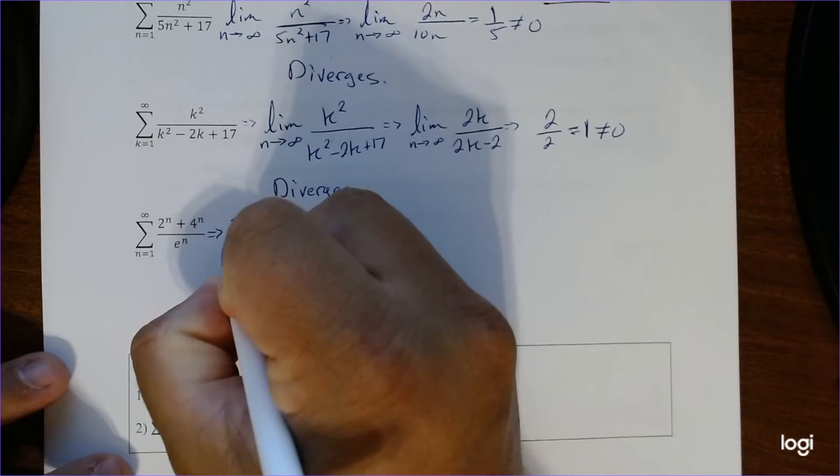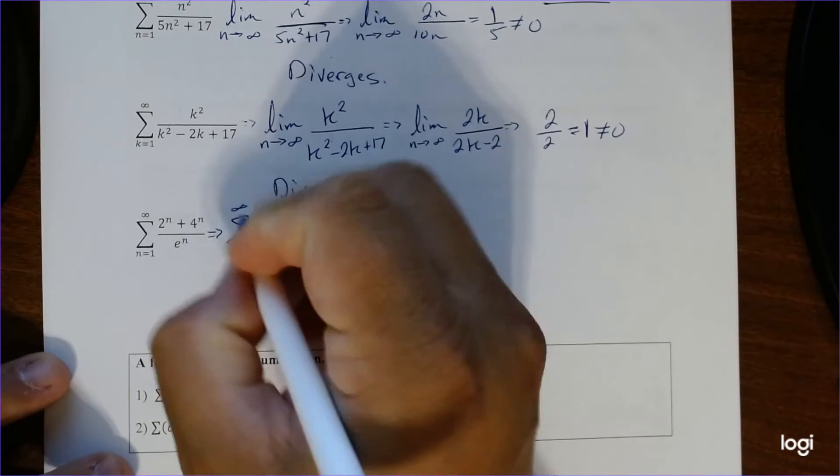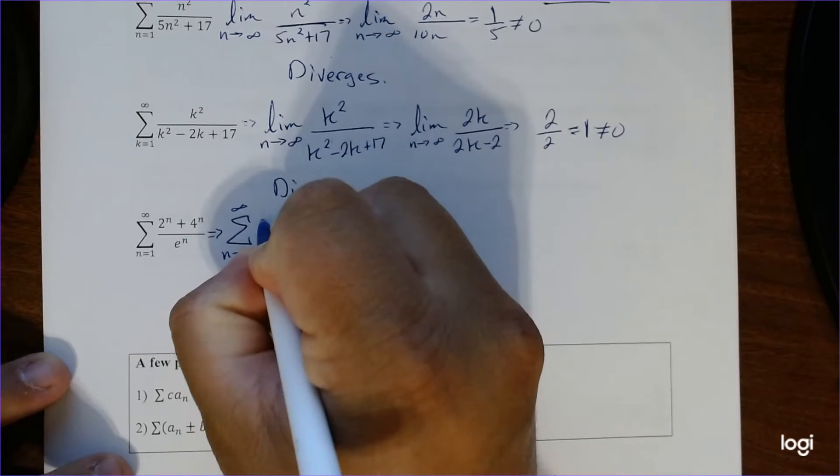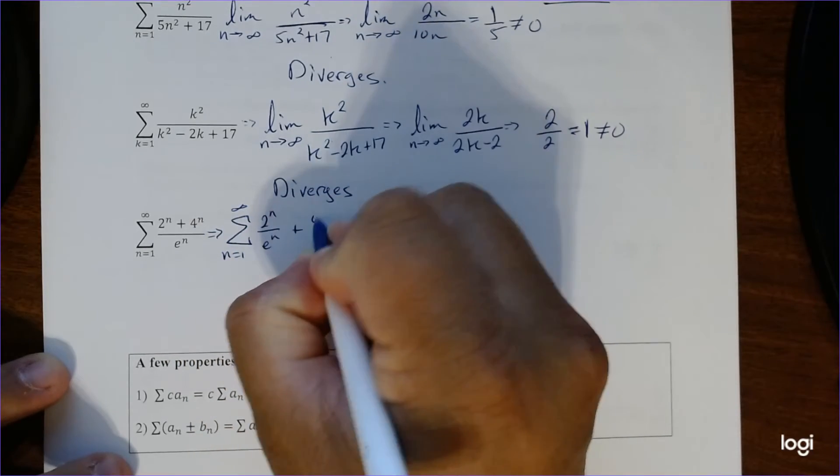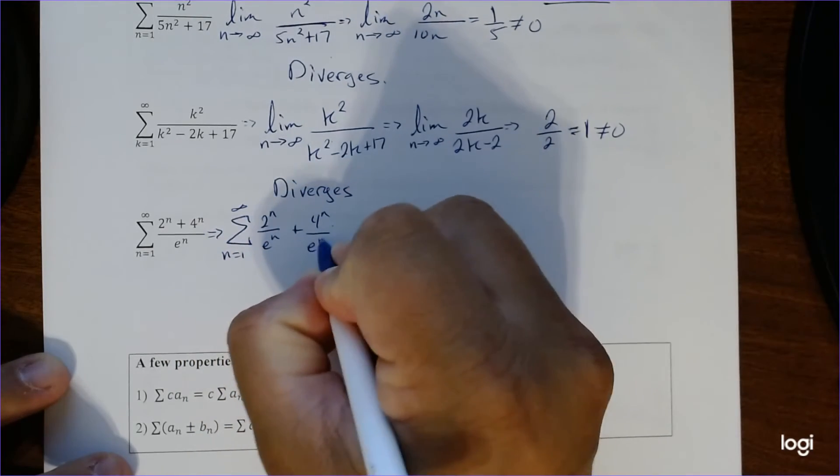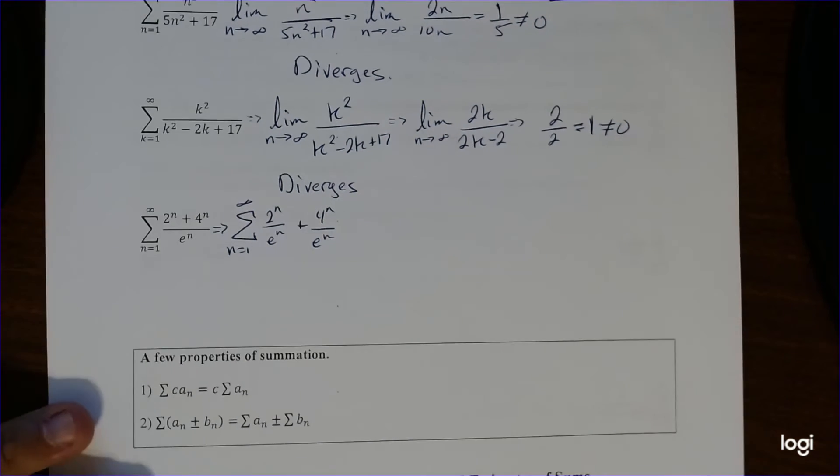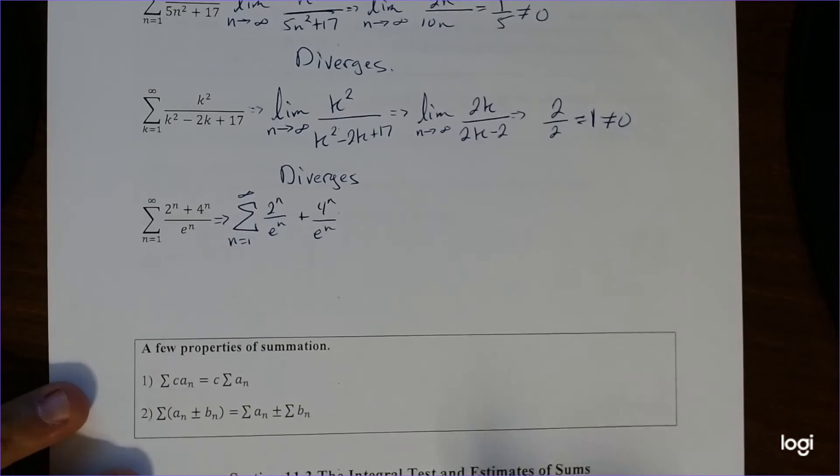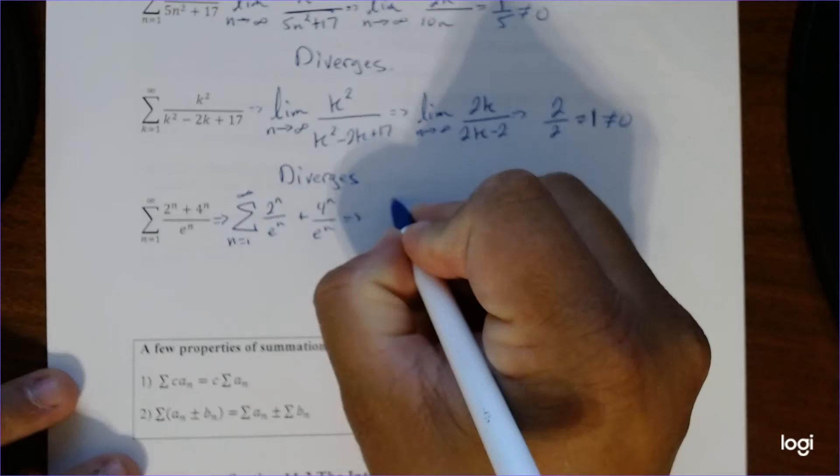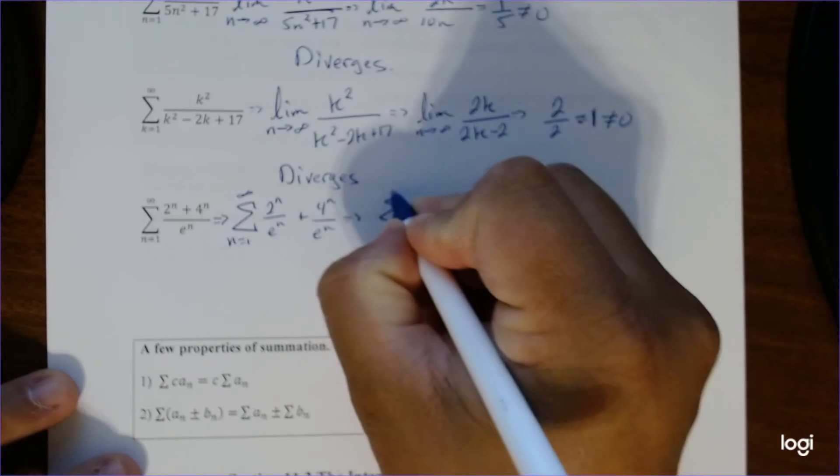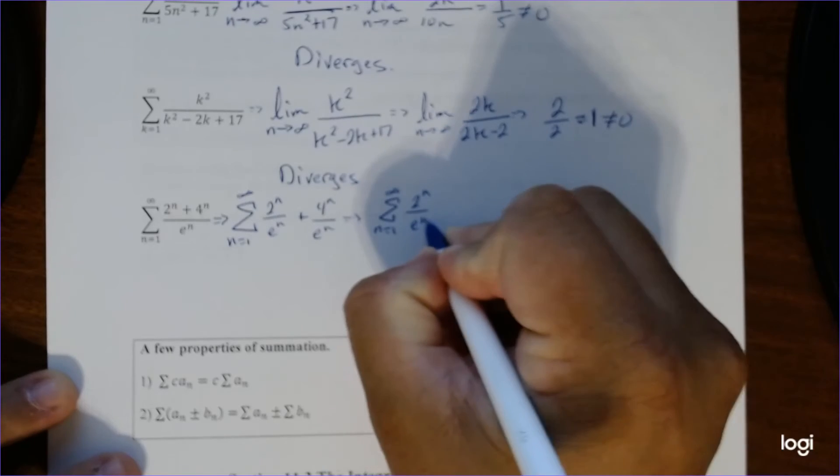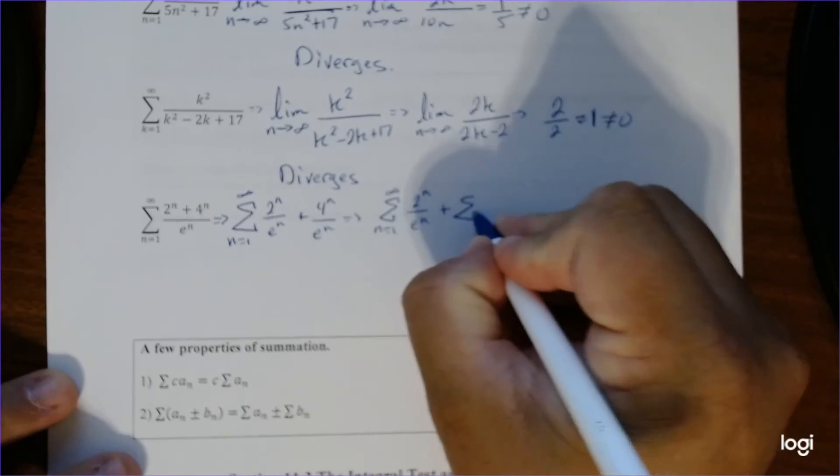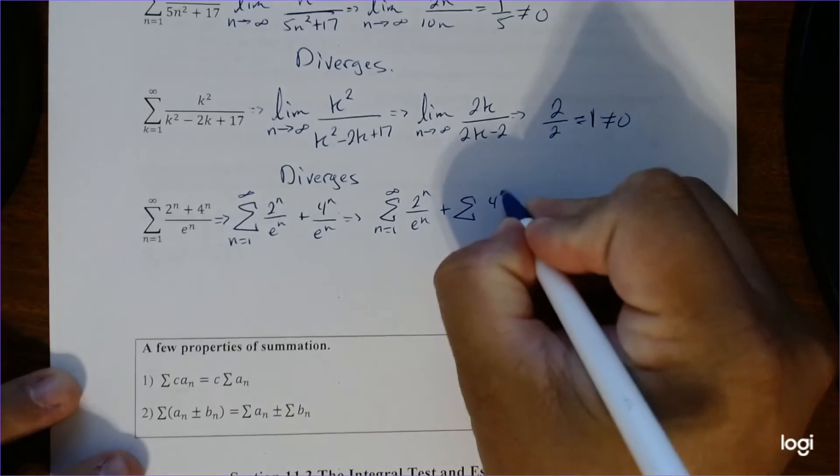Okay, so we can rewrite this as the sum of 2 series, like that. Now we can also rewrite this as now the sum of 2 to the n over e to the n, plus the sum of 4 to the n over e to the n.